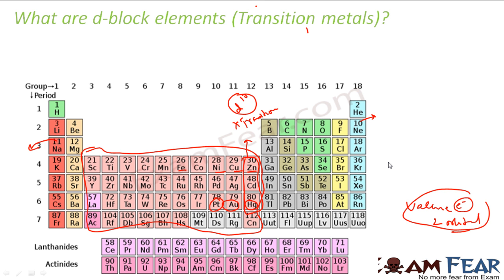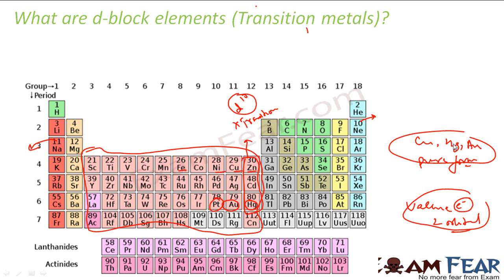D block elements show variable oxidation states and act as catalysts. They have colored ions, form complexes, and have magnetic properties. They are hard, have high melting and boiling points, and are typically silvery and shiny — good conductors of heat and electricity, and are malleable and ductile. They are typically found in compound state because they are reactive. Copper, silver, and gold are found in pure form, but most others are found in compound form as they react with atmospheric oxygen to form oxides. Iron, cobalt, and nickel are strongly magnetic.